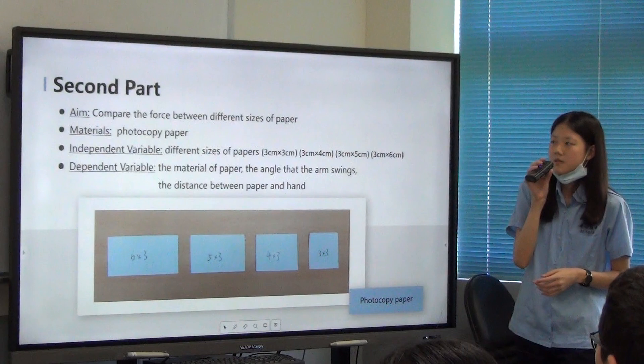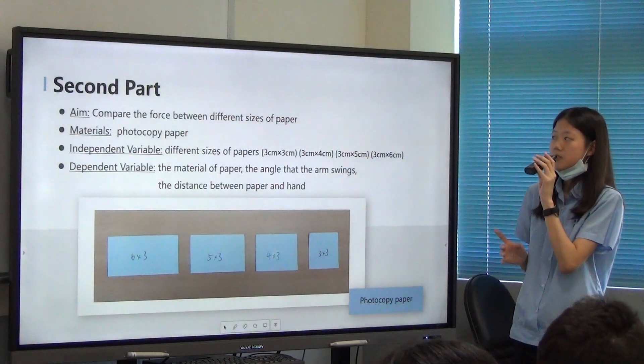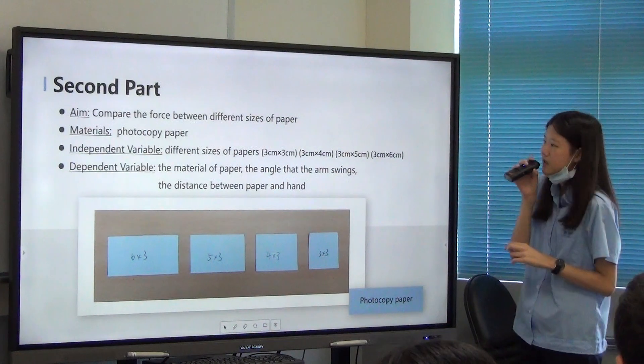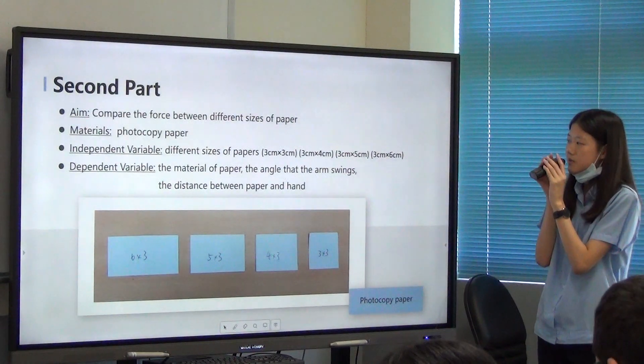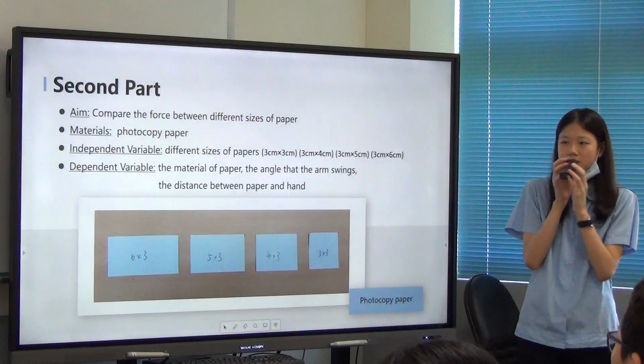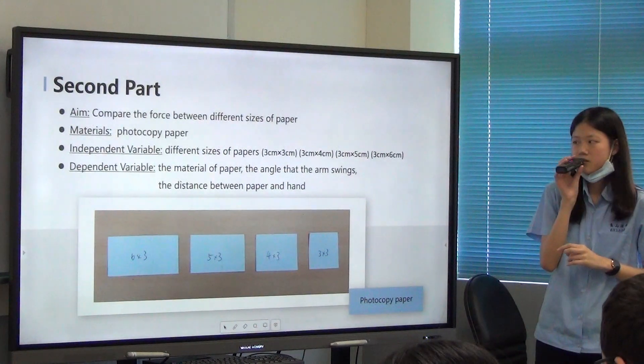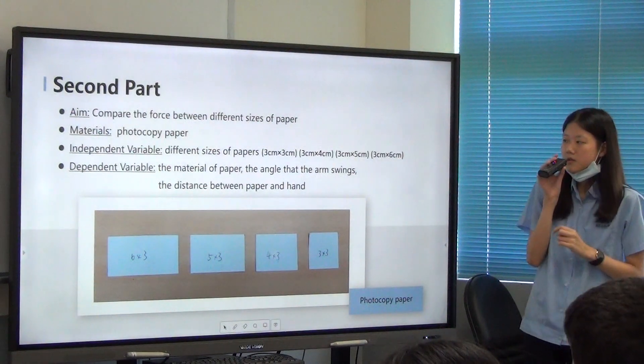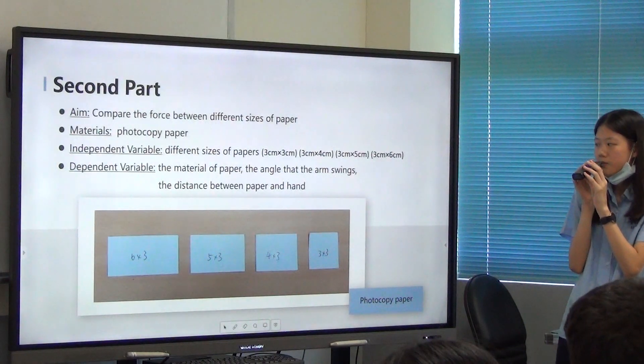For the second part of the experiment, we compared the force between different sizes of paper. And the material of the experiment is photocopy paper. The independent variable of the experiment is the different sizes of the paper. The dependent variables are the material of the paper, the angle that the arm swings, and the distance between paper and hand.